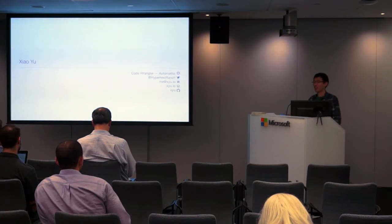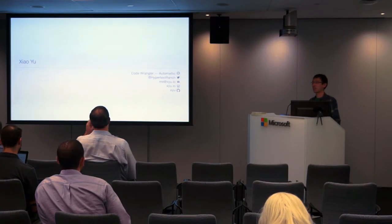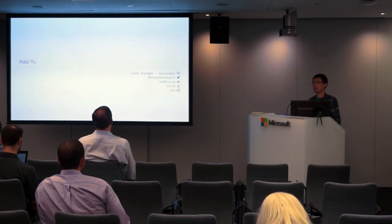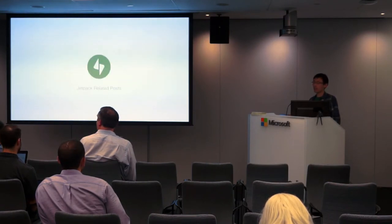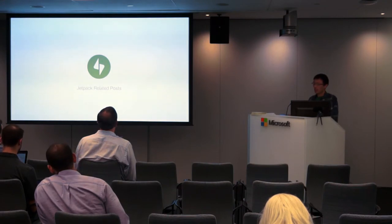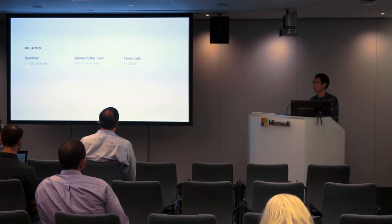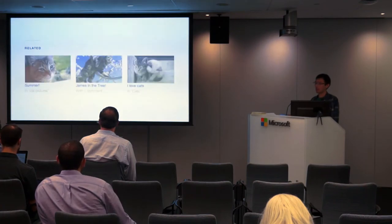First, a little bit about myself. My name is Xiao Yu. I can be found on Twitter as HypertextRanch, XYU on GitHub, and I'm also a code wrangler for Automattic. At Automattic, I'm one of the developers behind Jetpack Related Posts. You may have seen this around the web — it looks something like this, or maybe like this with images turned on.